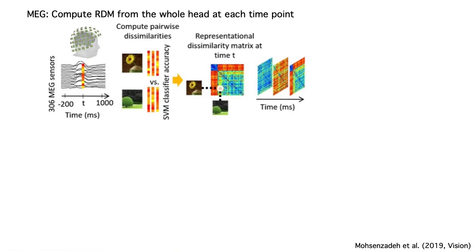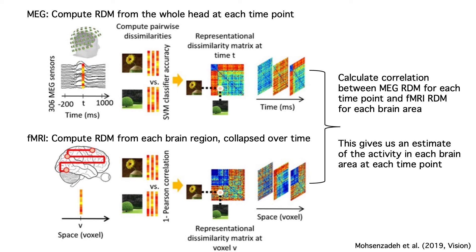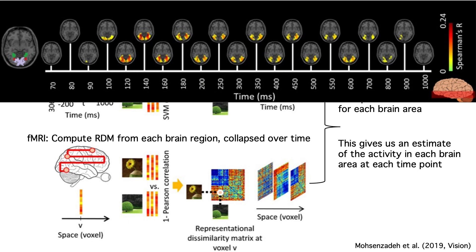To accomplish this, they calculated a representational dissimilarity matrix for the MEG data at each time point and a representational dissimilarity matrix for the fMRI data for each brain area. A representational dissimilarity matrix is just 1 minus the representational similarity matrix. The next step was to calculate the Spearman-Rho rank-order correlation between the MEG matrix at each time point and the fMRI matrix for each region, resulting in one correlation value for each combination of MEG time point and fMRI brain region. The intensity at each voxel shown is the representational similarity between that brain region in the fMRI data and the magnetic field distribution at a given time point in the MEG data. These results are obtained by using a variety of visual stimuli to probe the brain and comparing the representational geometries of the fMRI and MEG data — making no assumptions about the physics of EEG or MEG.